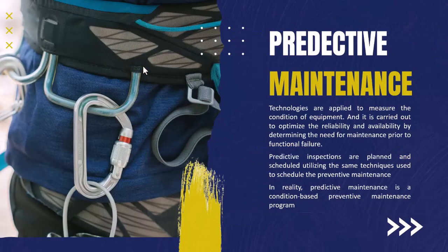Predictive maintenance is carried out based on technologies applied to check the condition of equipment. Using such technology, we can discover early signs of failure. The technologies used depend on the nature of the asset. For example, we could use vibration analysis to discover excessive vibrations in rotating equipment such as pumps and turbines, which could be a sign of potential failure. We could also use thermography inspection, since excessive temperature could indicate high friction requiring lubrication or component replacement.